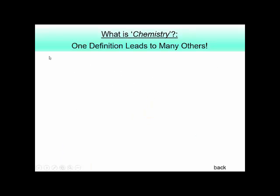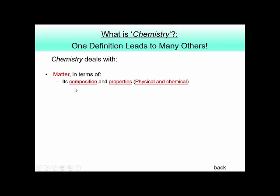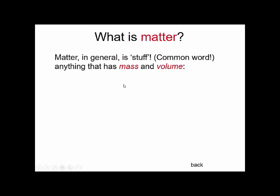We'll start by defining the word chemistry. Chemistry deals with matter in terms of its composition and properties. Let's define matter. Matter, in general, is anything that has mass and volume. If you have something that has both of these properties, then you can say it's matter.